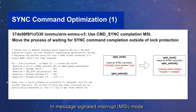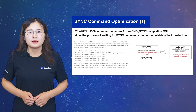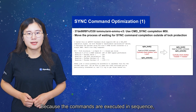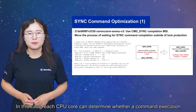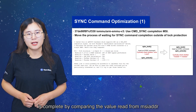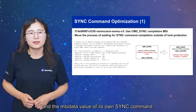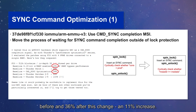In message signal interrupt mode, the hardware writes the MSI data value to the MSI address each time a sync command is executed. The optimization applied here enables all sync commands to share the same MSI address, and the MSI data value increases monotonically each time. Because the commands are executed in sequence, the larger MSI data value will overwrite the smaller value. Each CPU core can determine whether a command execution is complete by comparing the value read from the MSI address and the MSI data value of its own sync command. This is the optimization effect, with SMMU performance recorded at 25% before and 36% after this change — an 11% increase.